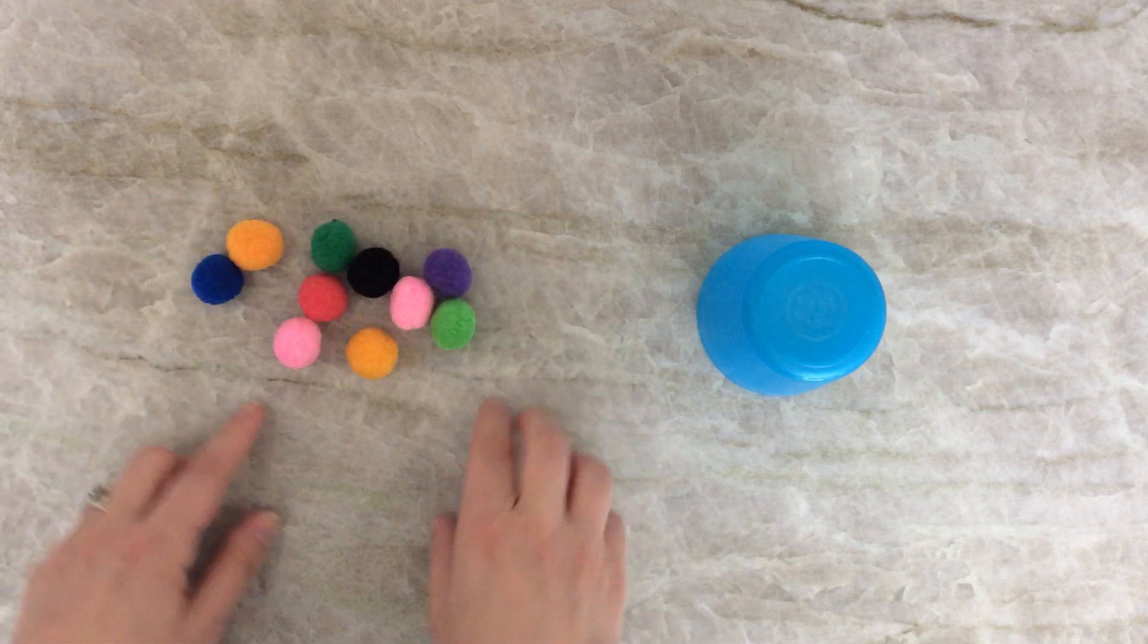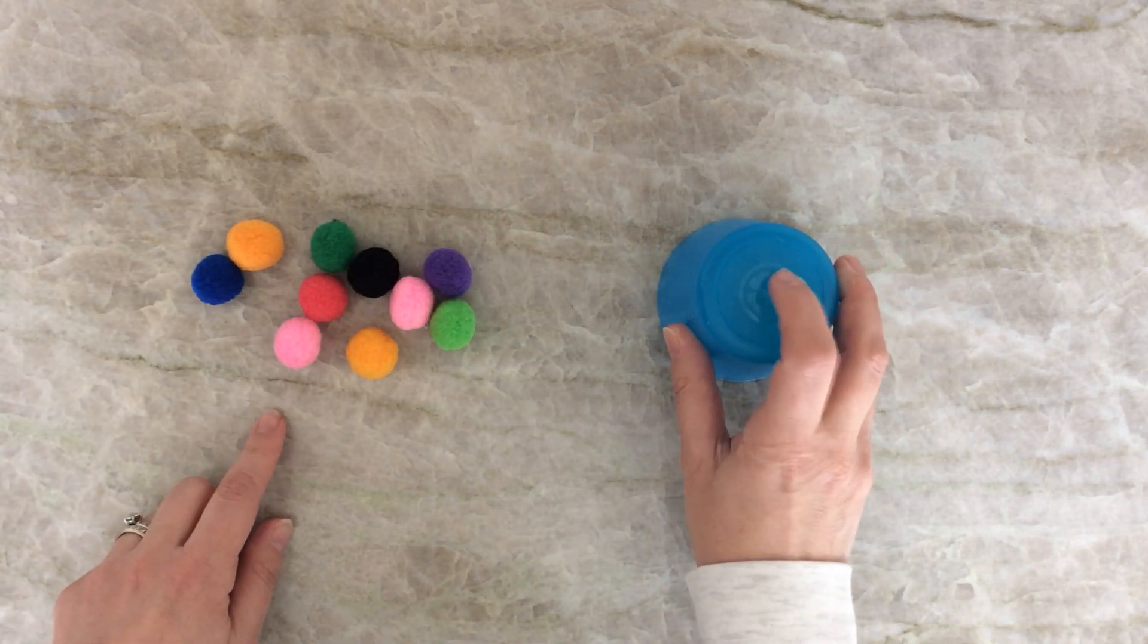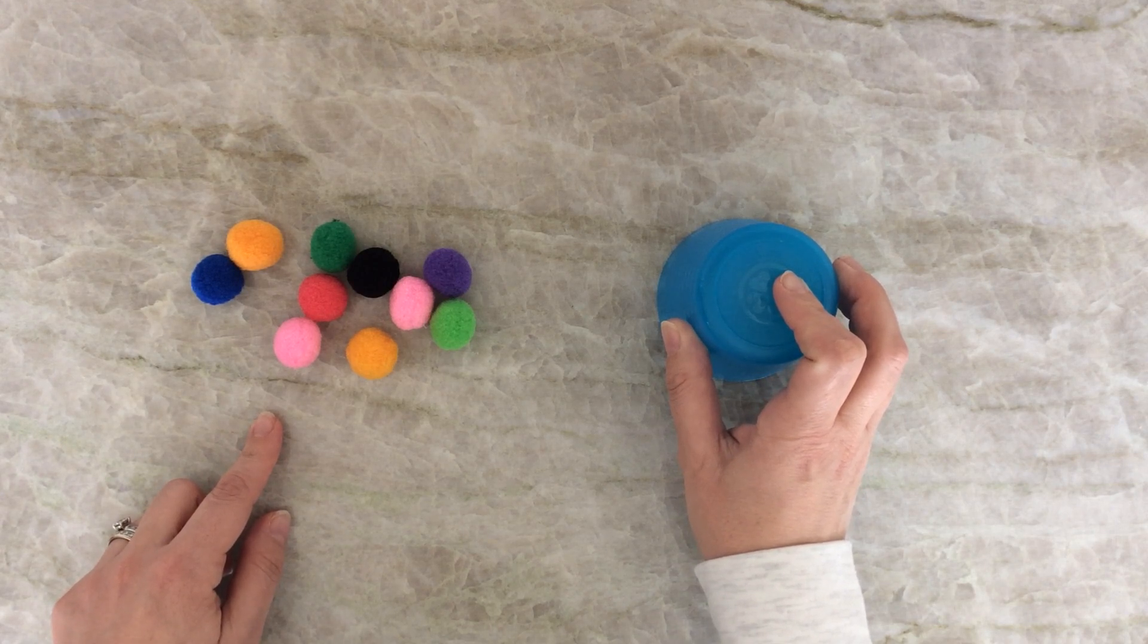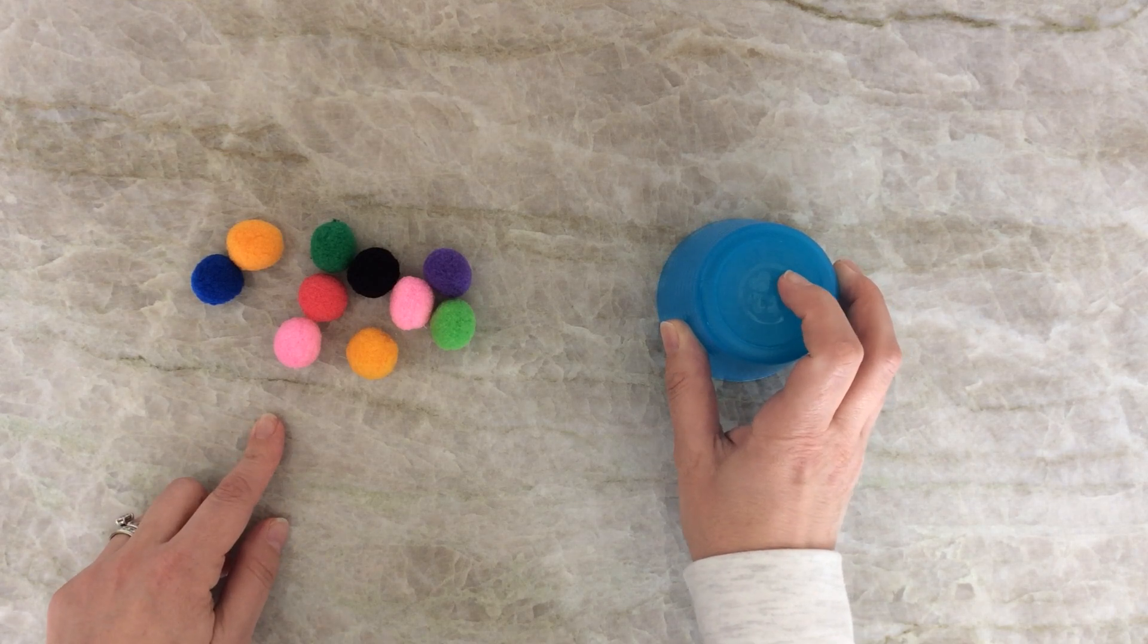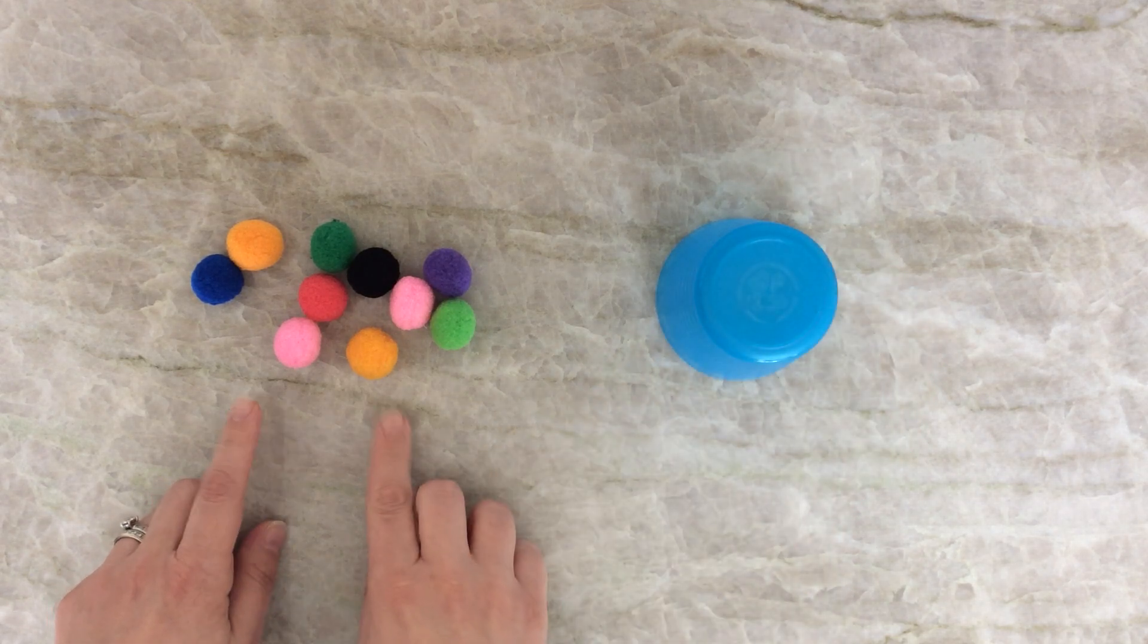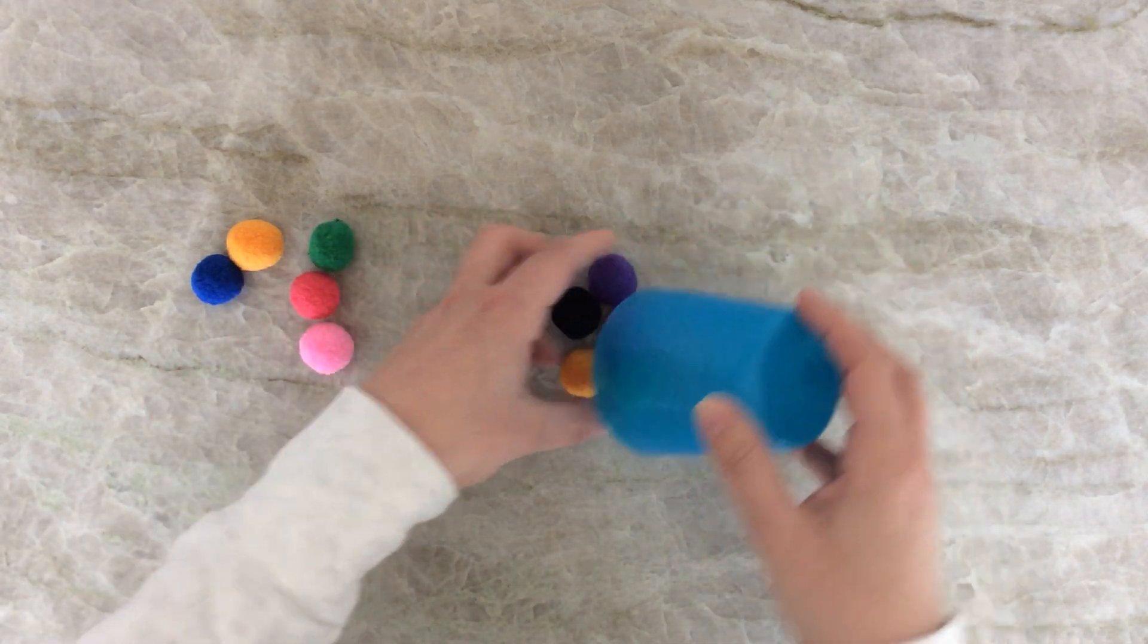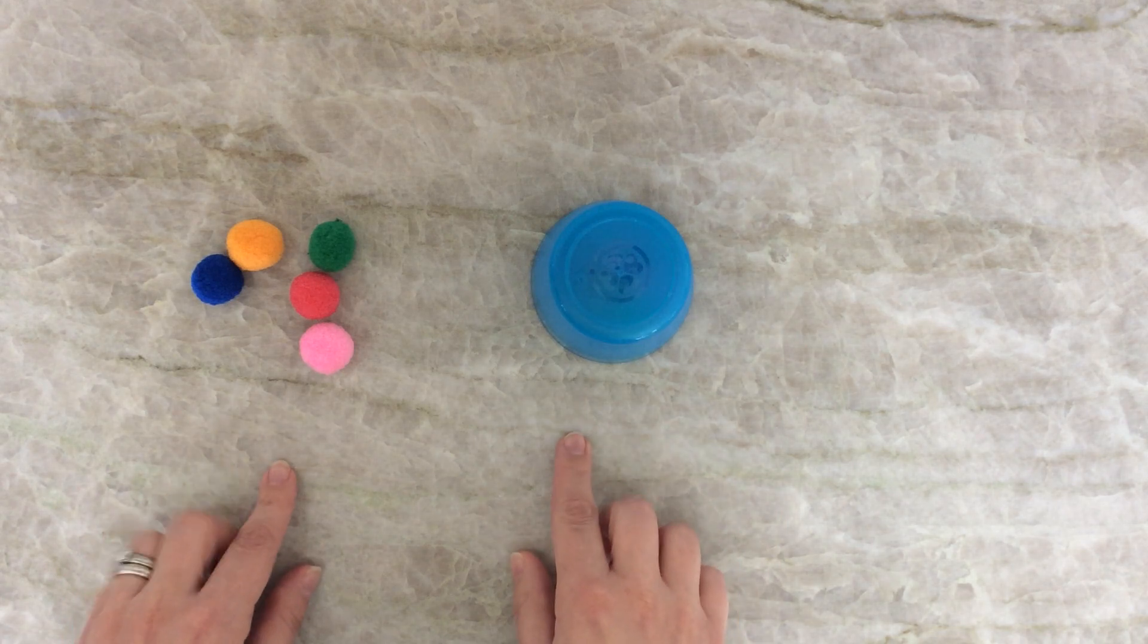Now here's how we're going to play the game. I'm going to hide some pom-poms underneath this cup. I want you to close your eyes and you're going to guess how many are hiding under the cup. Ready? Don't forget, we have 10 pom-poms all together. Okay, close your eyes.